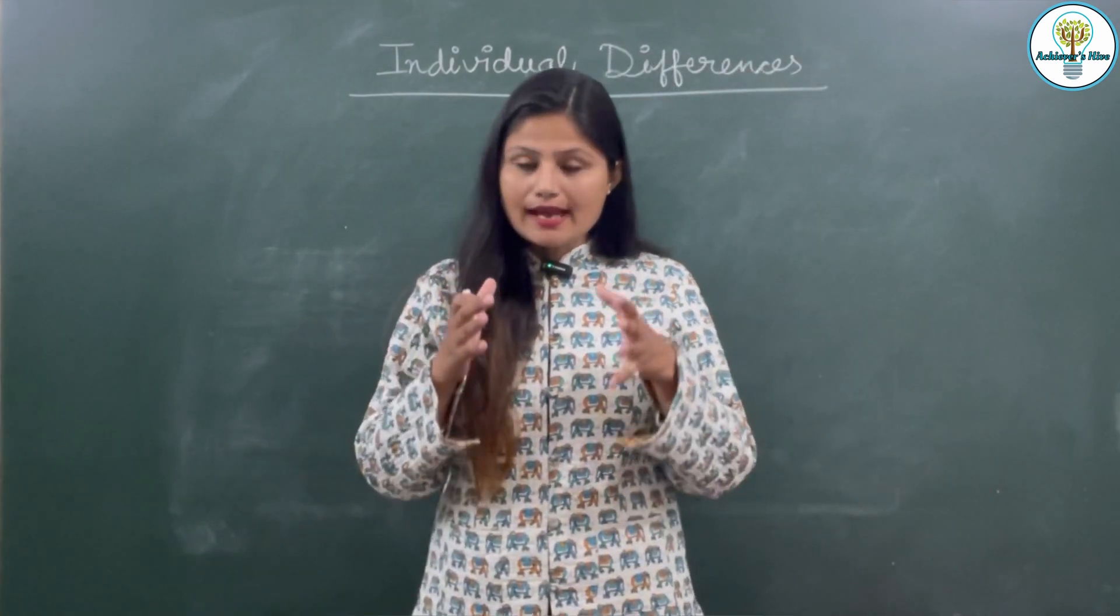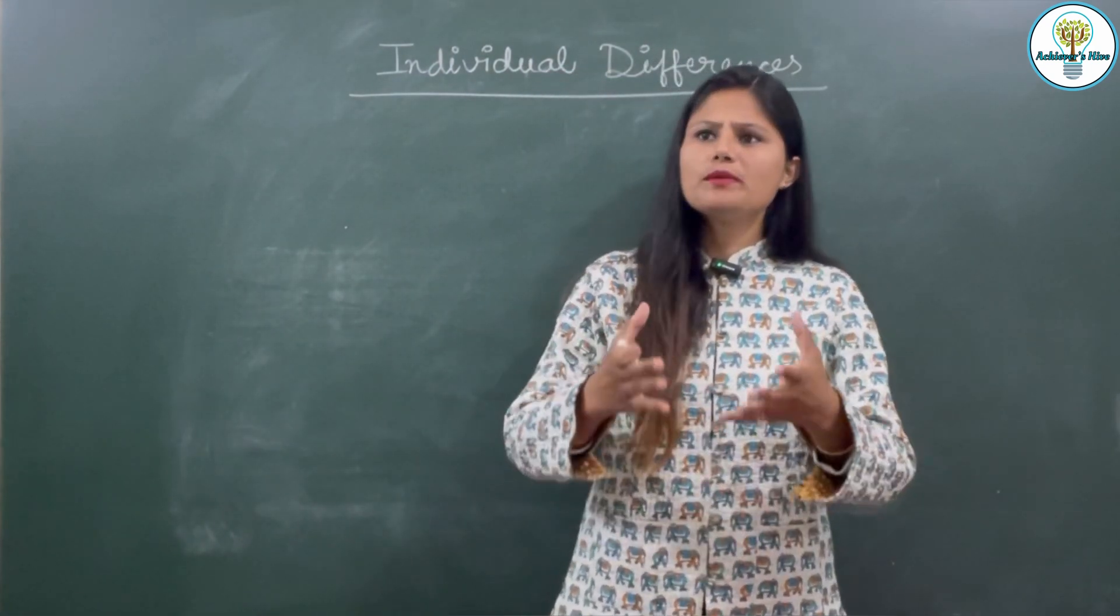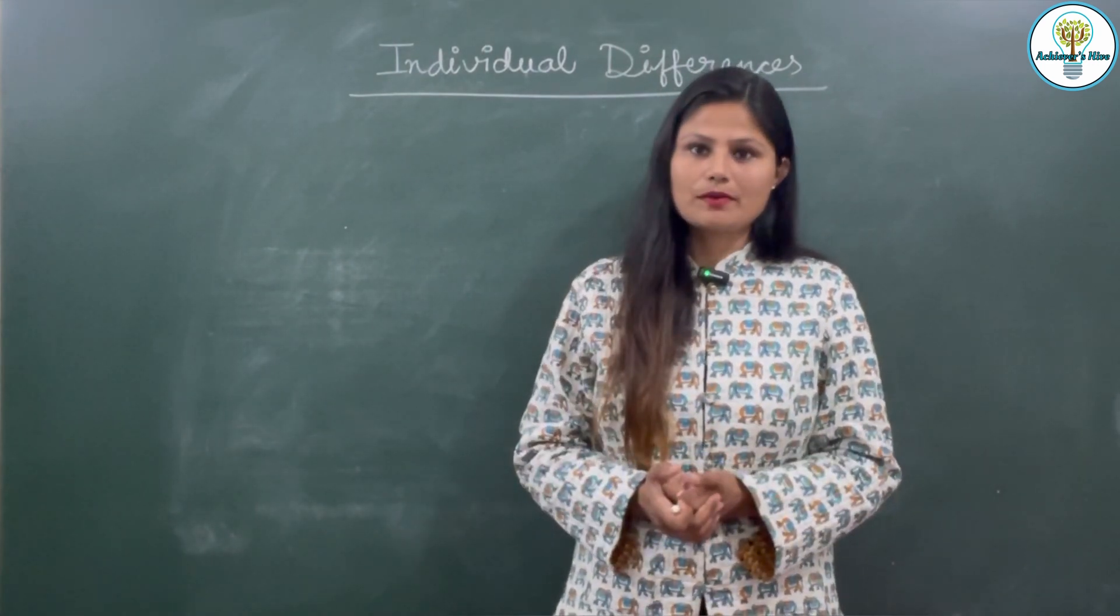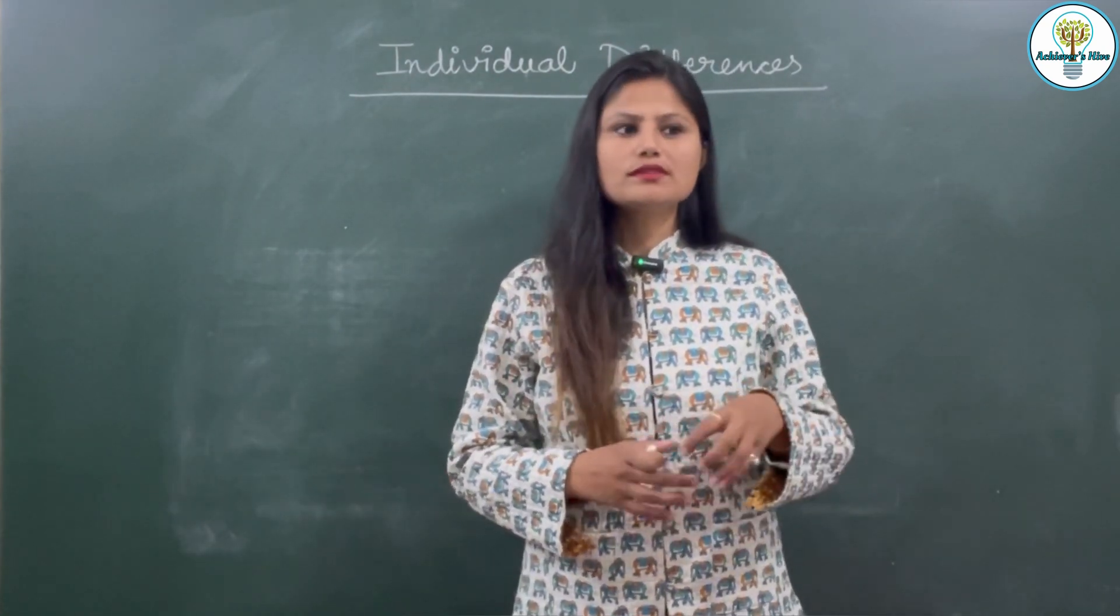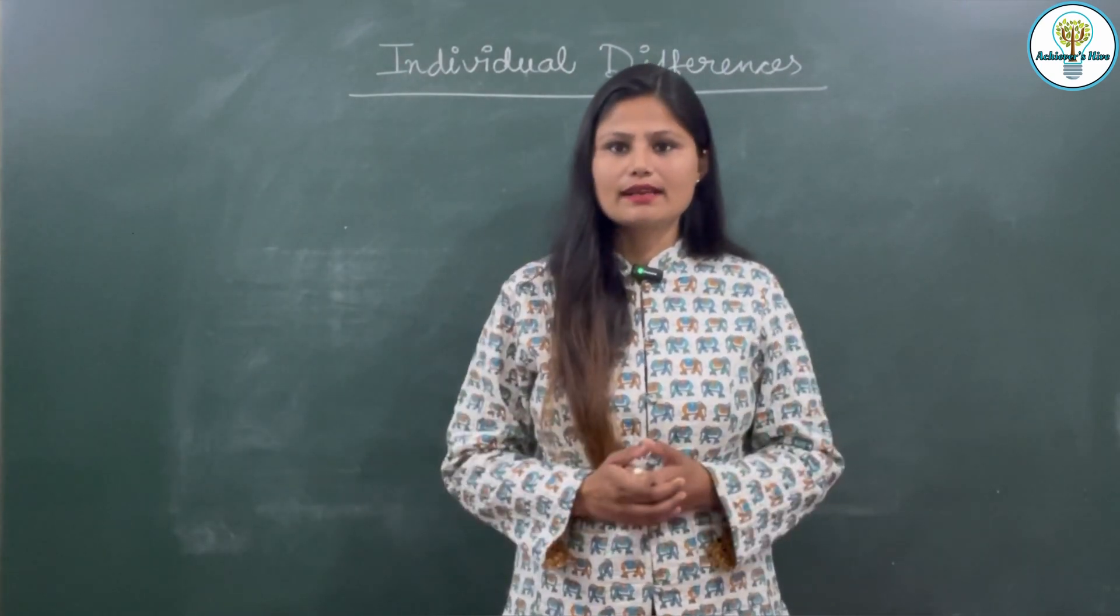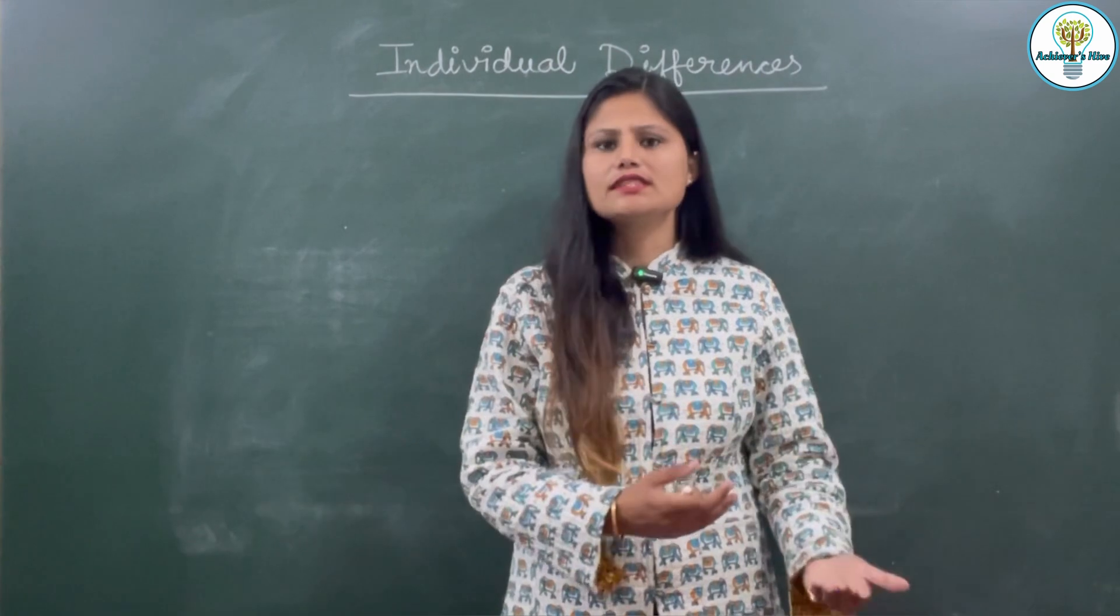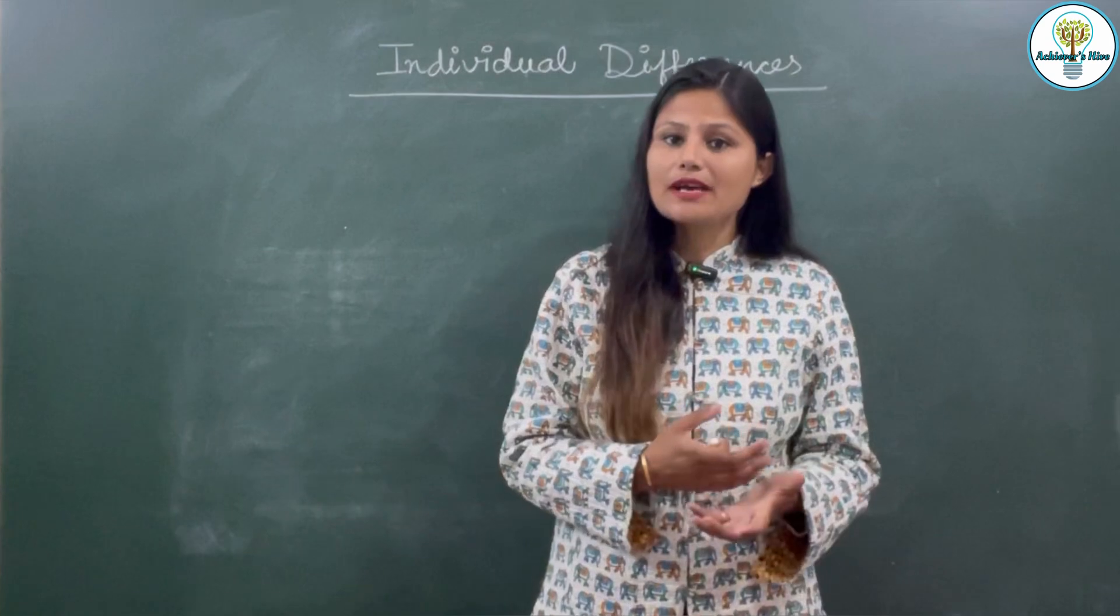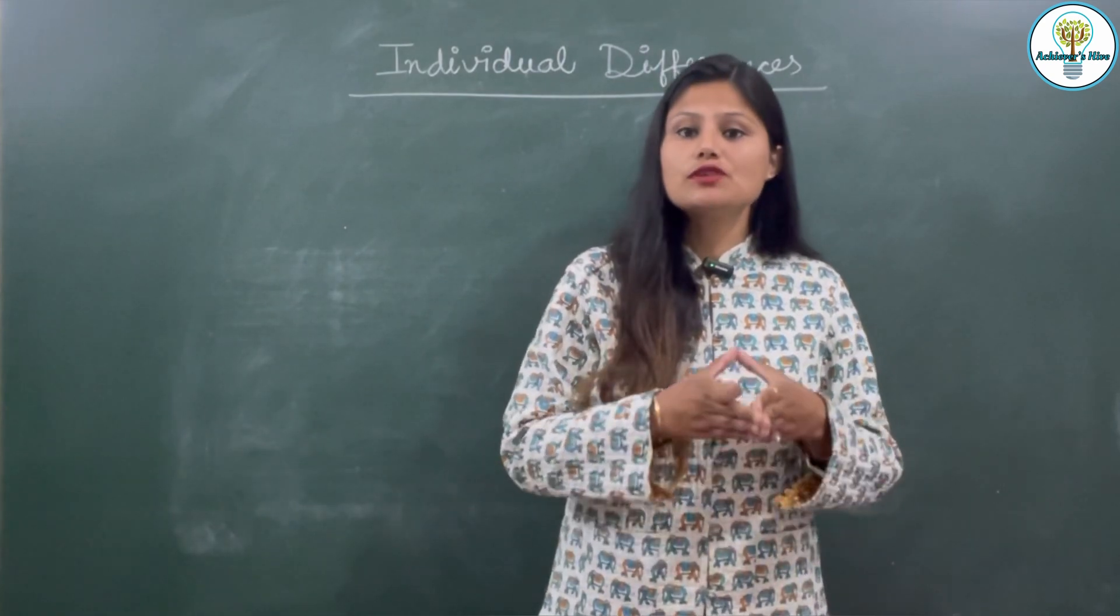When we say that one child has 90% marks and another has 85% marks, why do you think 85% is less? Because you are comparing it with 90%. If a child has 72% marks, then 85% will be more. So individual differences are the same - each person is very unique to you. And in addition to being unique, it can be more or less. The gap between two or different people is individual differences. This is an important term in psychology.